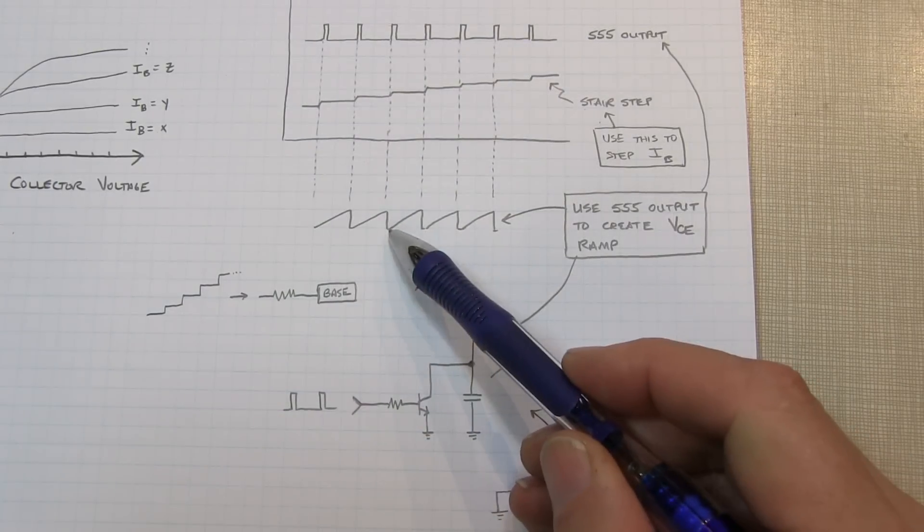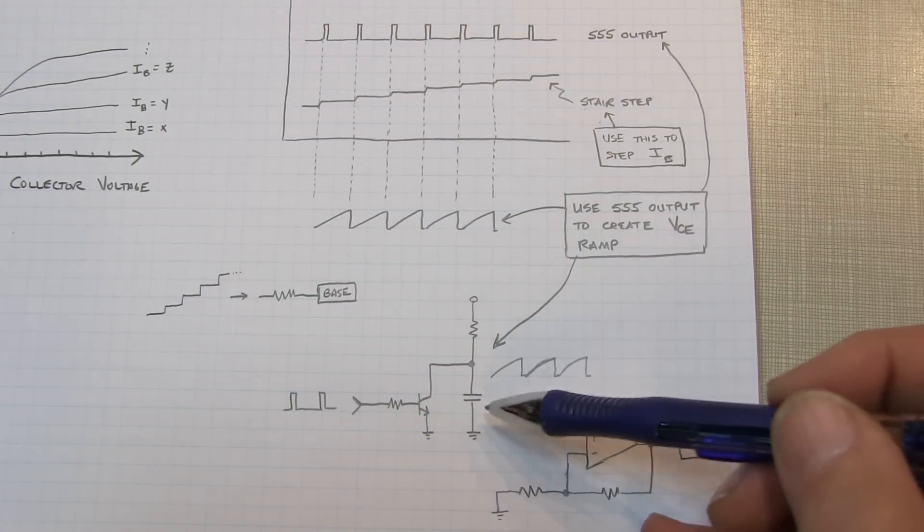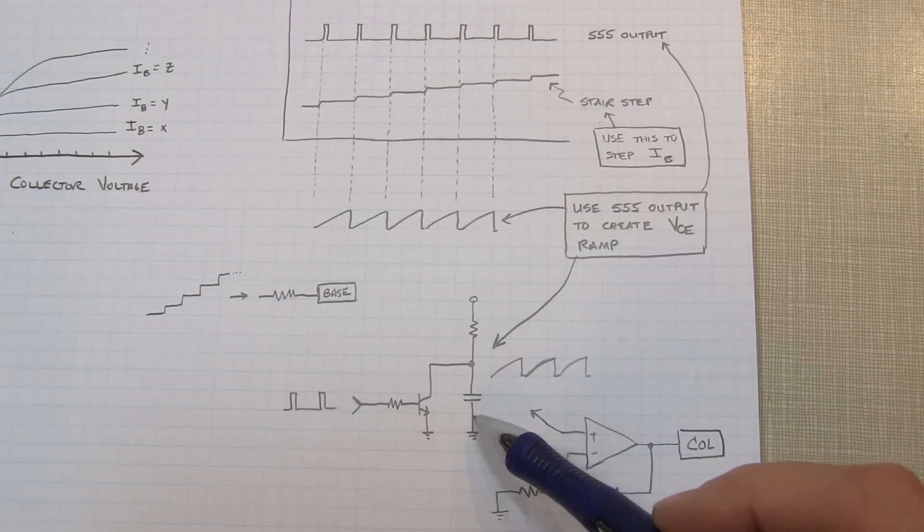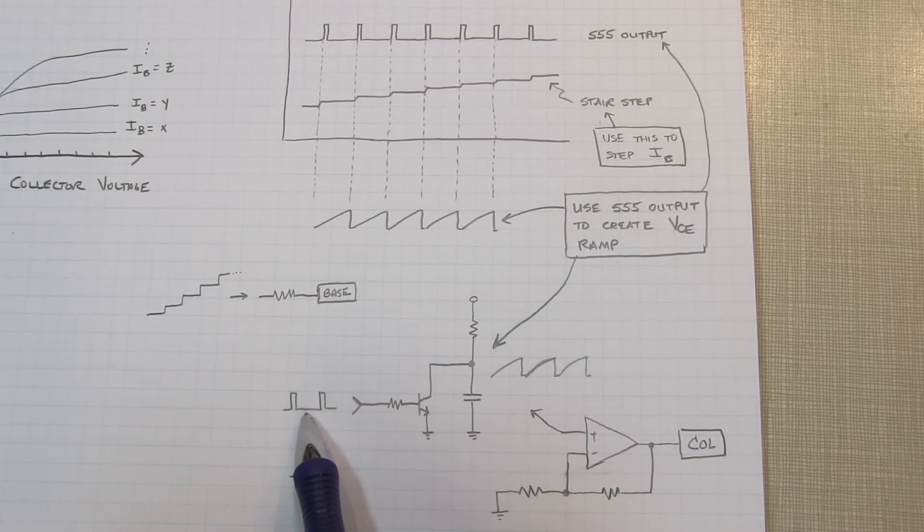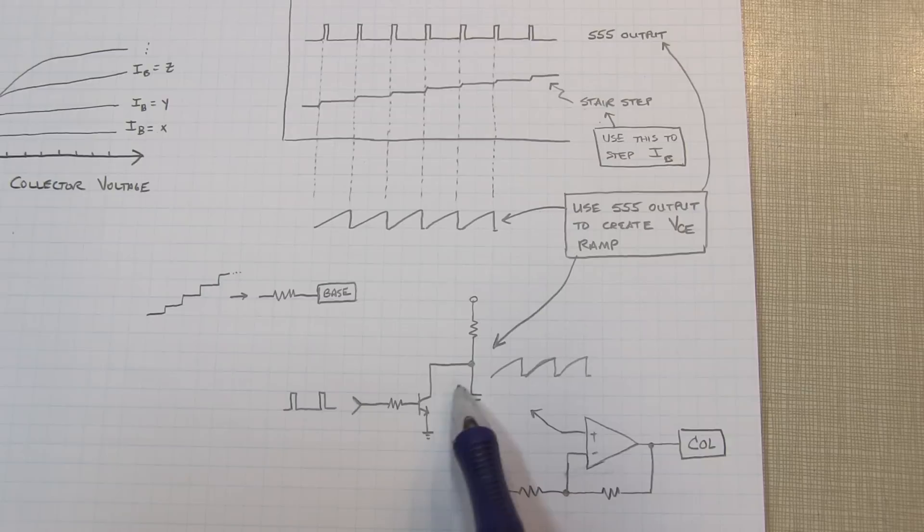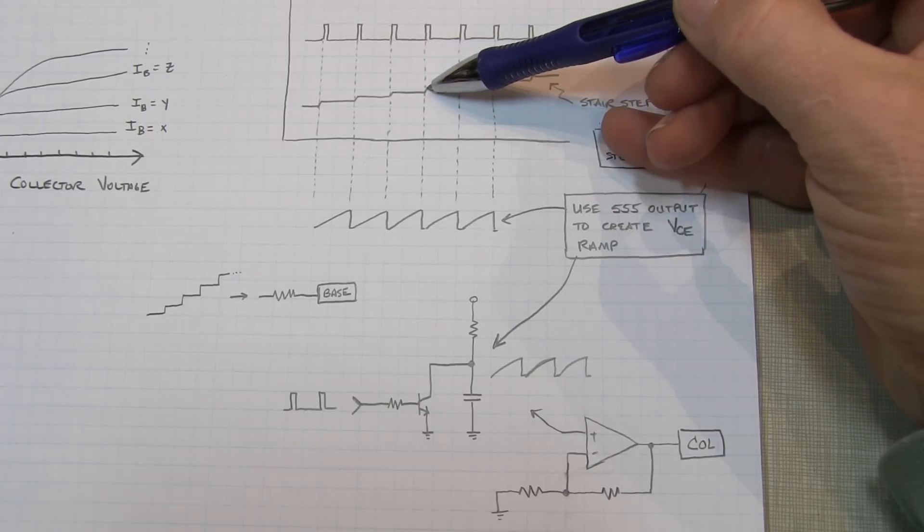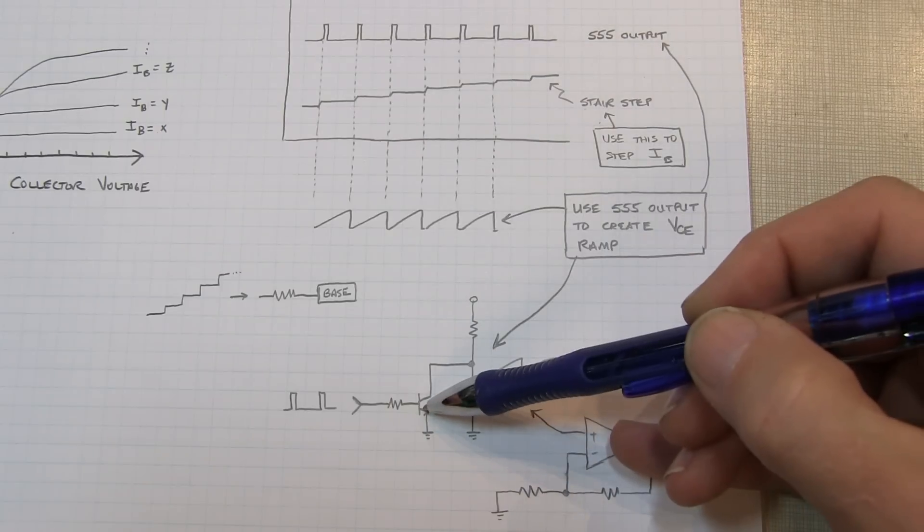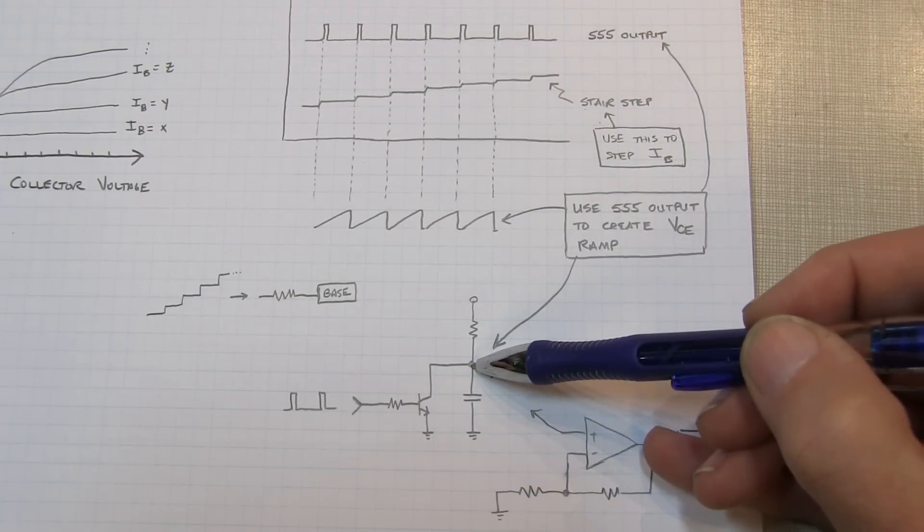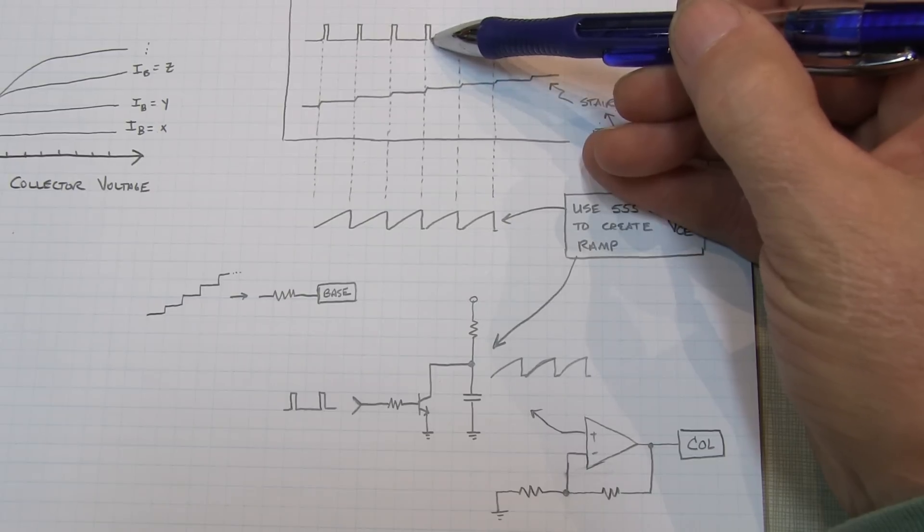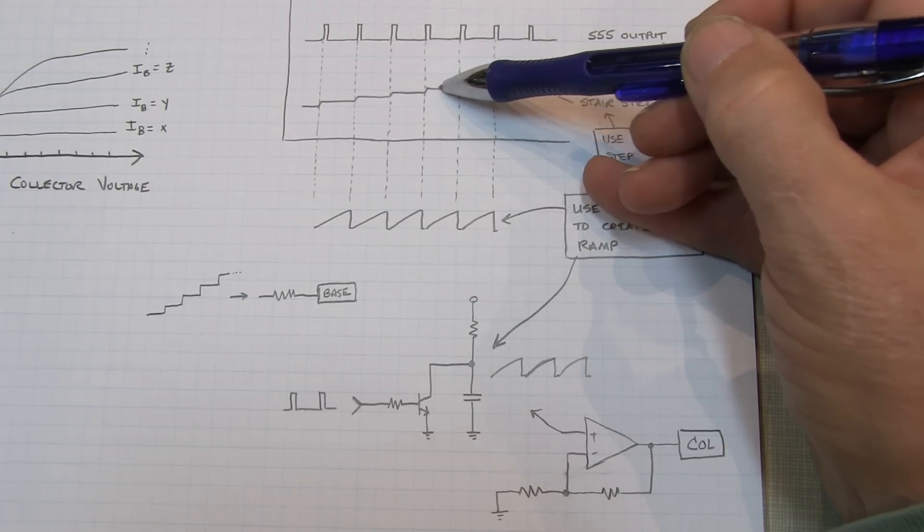To create our collector voltage ramp, we're simply going to charge up a capacitor through a resistor from the VCC supply here. And then using the pulses coming from the 555 timer, we'll periodically discharge that capacitor and let it reset again. So each time we get that pulse from the 555 timer that increases the step, at the same time we're going to turn this transistor on, which brings this collector voltage back to zero.